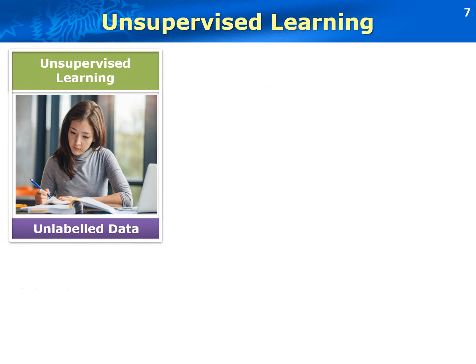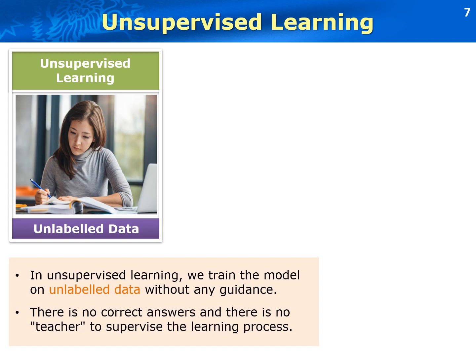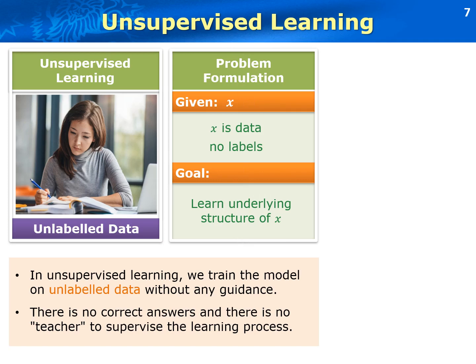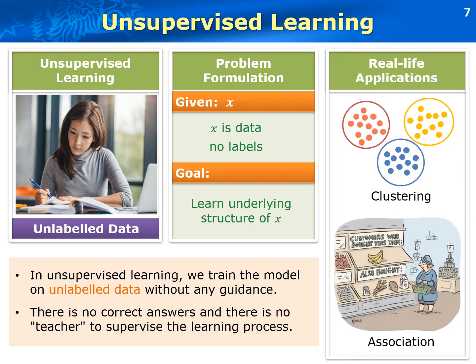The second learning method is unsupervised learning. Different from supervised learning that requires a teacher to supervise the learning process, unsupervised learning focuses on unlabeled data, and we train our model on unlabeled data without any guidance. There are no correct answers, no teachers to supervise the learning process. Thus, this process is called unsupervised learning. The problem of unsupervised learning can be formulated as follows: given the data X with no labels, our goal is to learn the underlying patterns and structures of X to gain more knowledge about the data. Typical real-world examples for unsupervised learning include clustering and association.